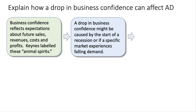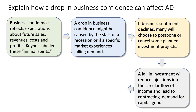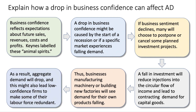A drop in business confidence might be caused by perhaps the start of a recession, and if business sentiment goes down many firms may choose to postpone or even cancel some planned investment projects. A fall in investment — the 'I' in the formula C + I + G + X − M — will reduce injections into the circular flow of income. It's also going to lead to a fall in demand for capital goods: businesses making new machines, new hardware, building new factories will see demand for their own products going down. As a result, aggregate demand will fall.